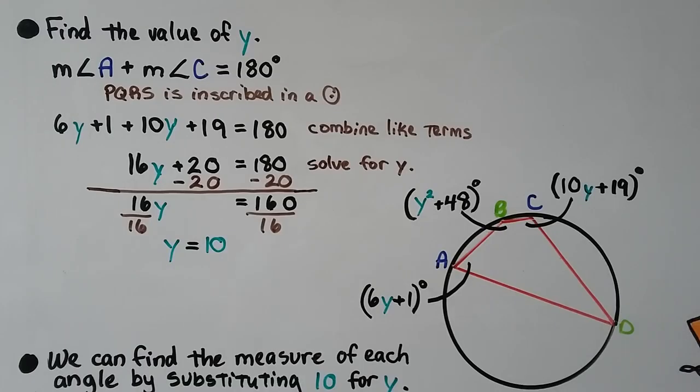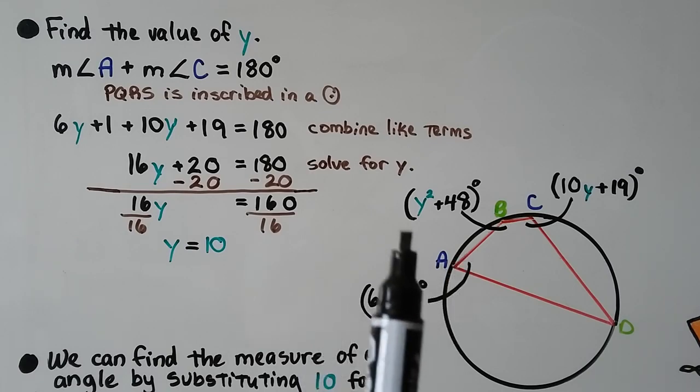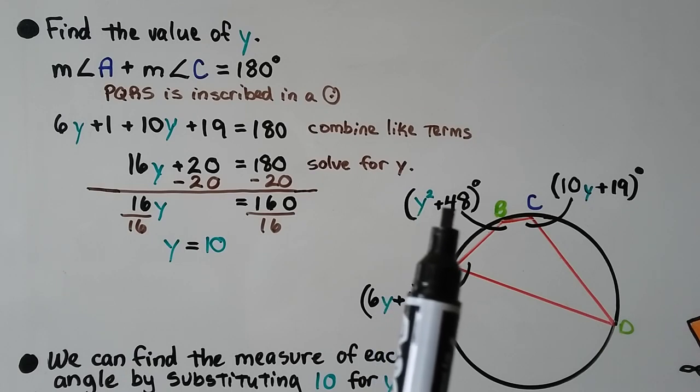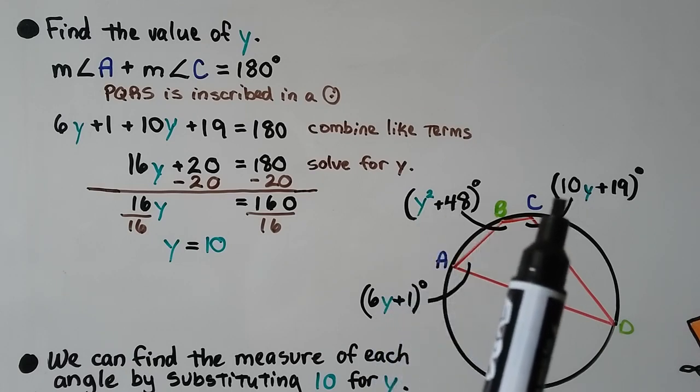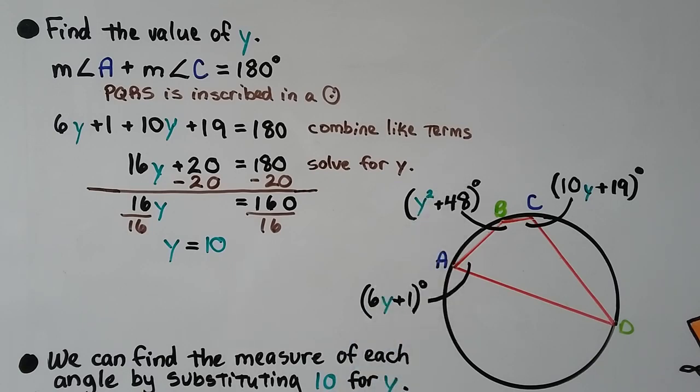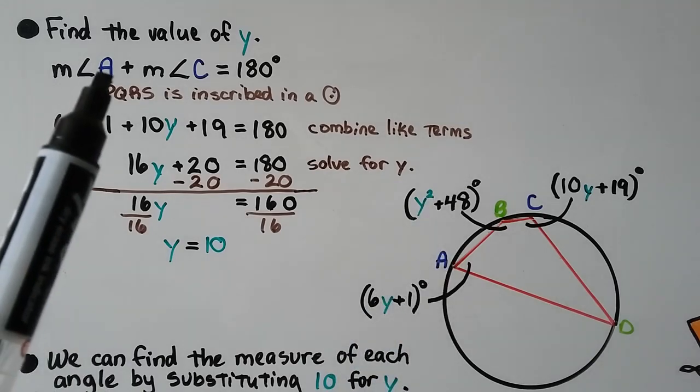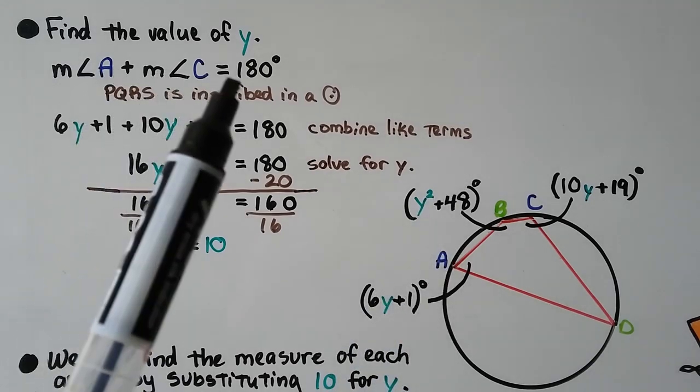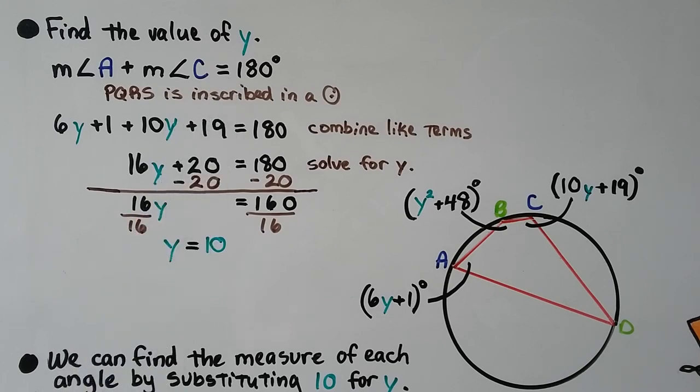For this example, they want us to find the value of Y, and we can see that angle A is 6Y plus 1 degrees, angle B is Y squared plus 48 degrees, and C is 10Y plus 19 degrees. So we need to find Y. The measure of angle A plus the measure of angle C will equal 180 degrees.